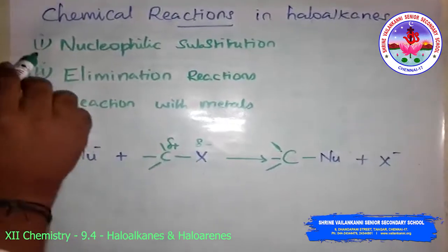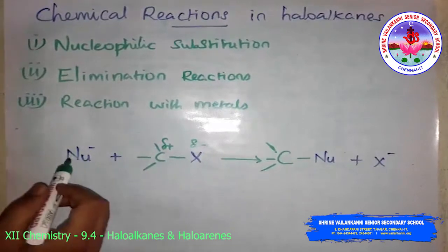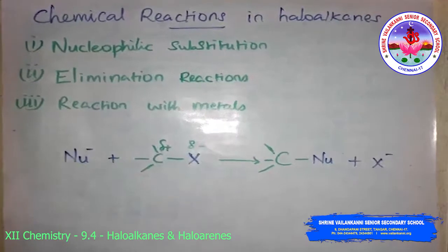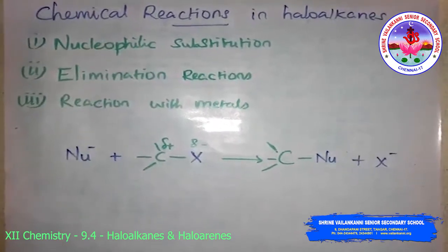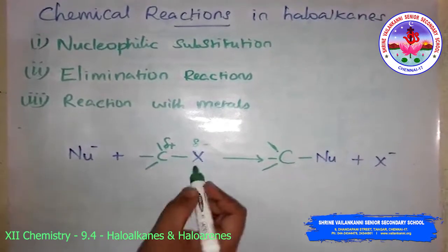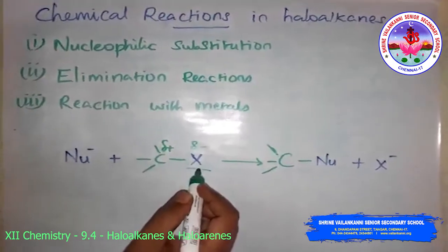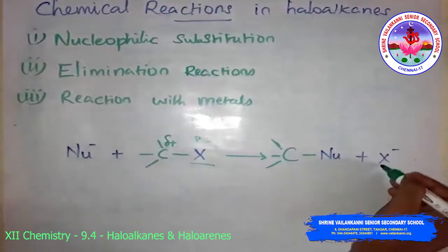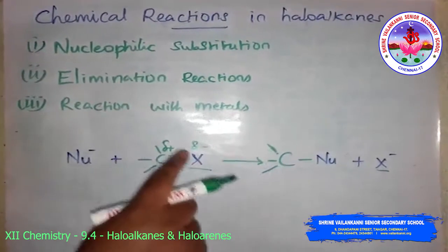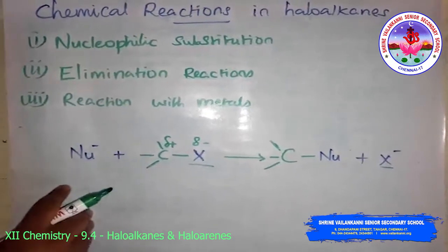First we will discuss the nucleophilic substitution reaction. The nucleophile reacts with the carbon-halogen bond for any alkyl halide. A substitution reaction takes place and the halogen atom is called a leaving group. The halogen atom departs as a halide ion. Since the substitution reaction is initiated by a nucleophile, it is called a nucleophilic substitution reaction.